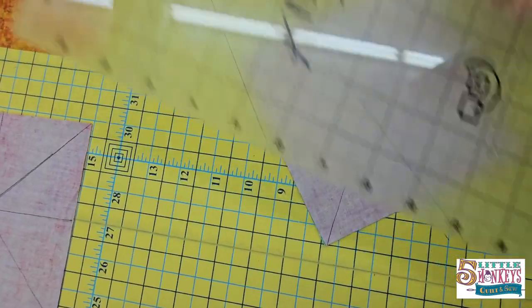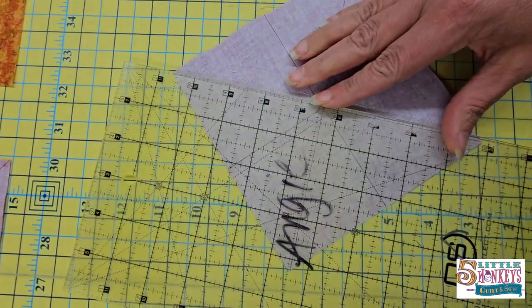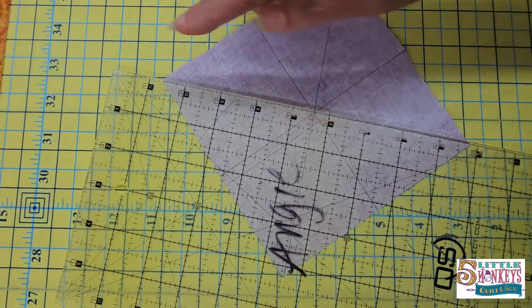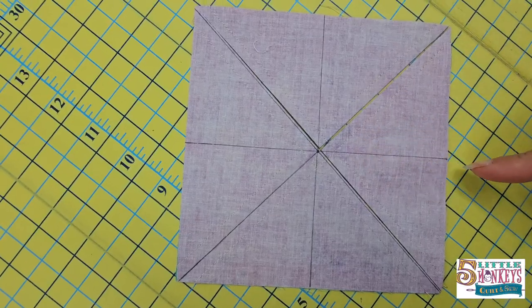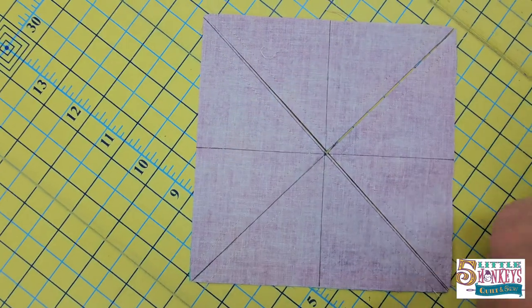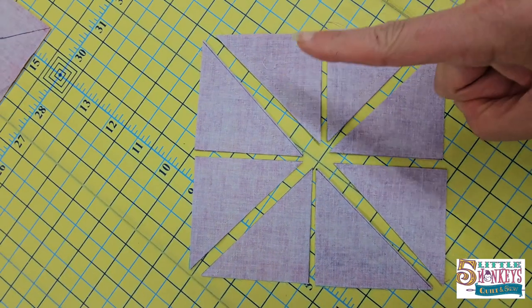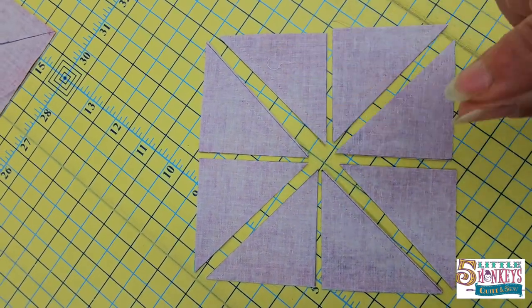Then you can do this with scissors or with your ruler and rotary cutter. We're just going to cut along the line both directions, then we're going to cut along the straight lines top to bottom. So now we have eight half square triangles.